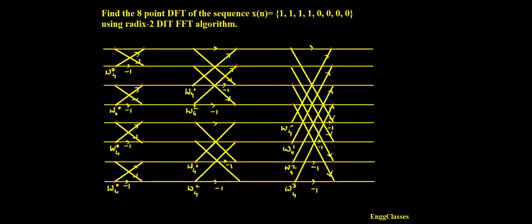Hello everyone, welcome to ng-classes YouTube channel for a video lecture series in digital signal processing. In this video lecture we shall consider a numerical: find the 8-point DFT of the sequence x[n] = {1, 1, 1, 1, 0, 0, 0, 0} using the radix-2 DIT FFT algorithm. This is one of the very interesting numericals.